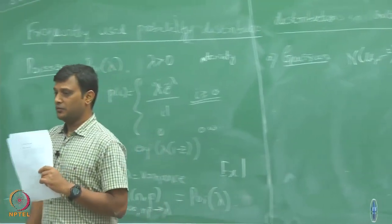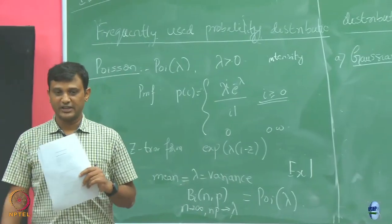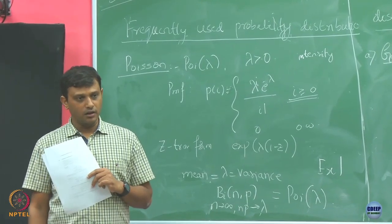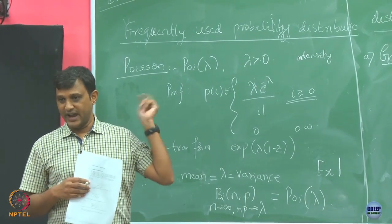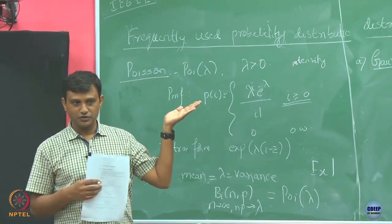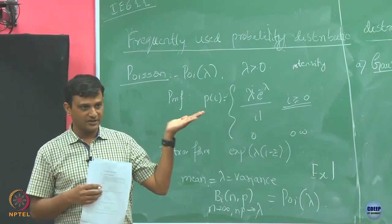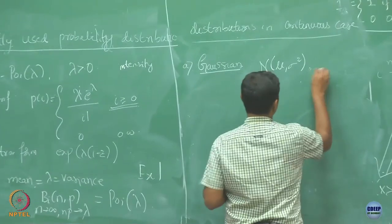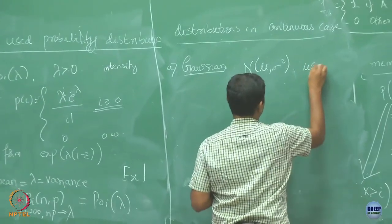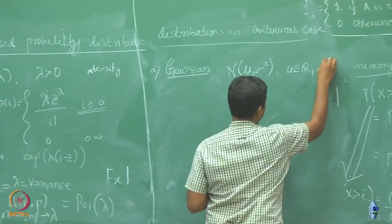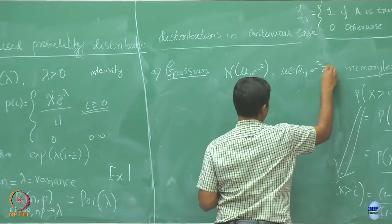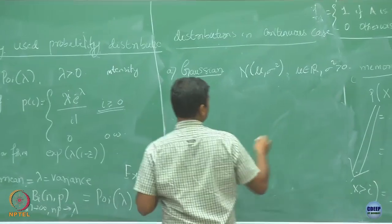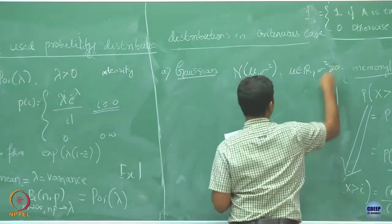The Gaussian distribution has parameters μ (mu) and σ² (sigma square), just like earlier we had P and n as parameters. For the Gaussian distribution, mu is a real number and sigma square is a positive quantity, and it could also take the value 0.